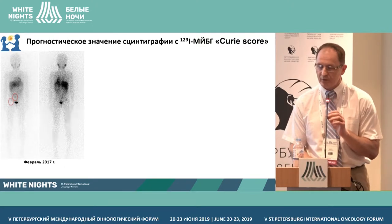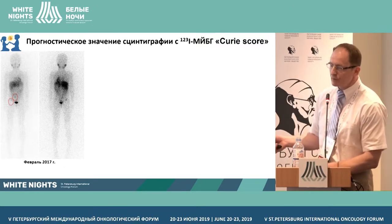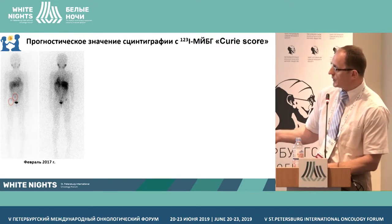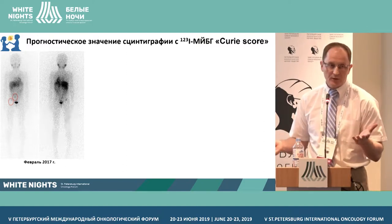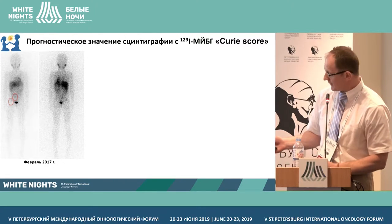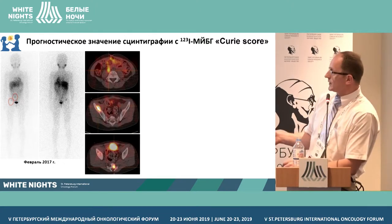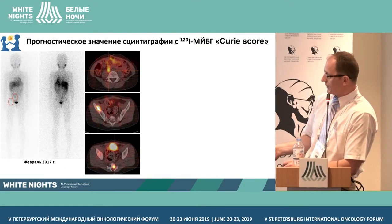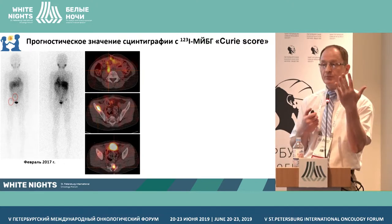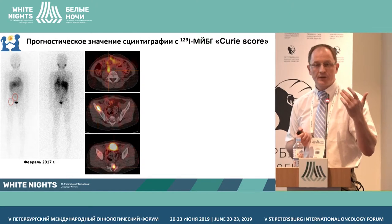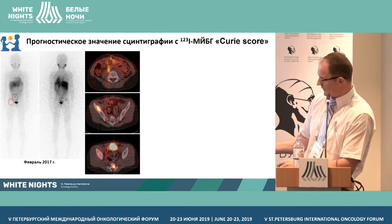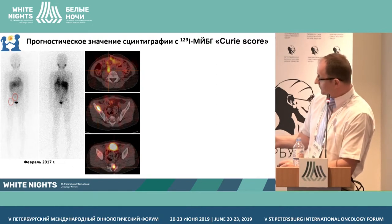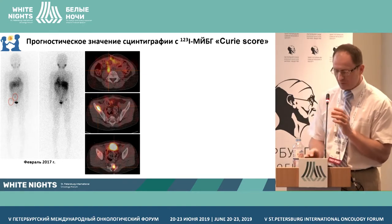But things are not so simple. Whether it is Curie or SIOPEN with 12 segments, everything is calculated based on planar images. On the planar image of the patient you see two foci, and we give a certain score. But in fact, this patient had another focus localized in the sacrum. Since it is behind the bladder on planar images, the activity of the bladder does not allow us to visualize this focus, and only PET-CT allows us to see it.